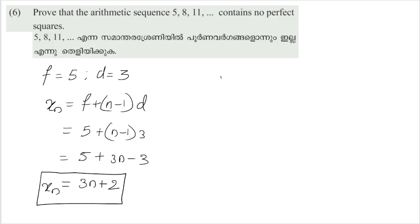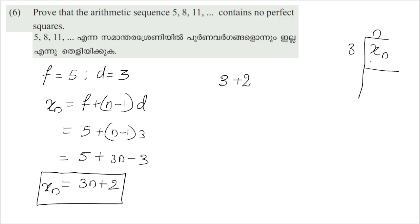xn is equal to 3n plus 2. That means 3 divides (xn minus 2), so we look at the remainder when xn is divided by 3. The remainder is 2. Now, for a number to be in this sequence, when divided by 3, the remainder must equal 2.